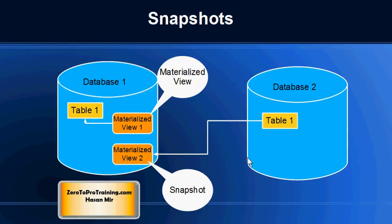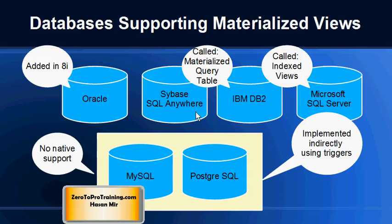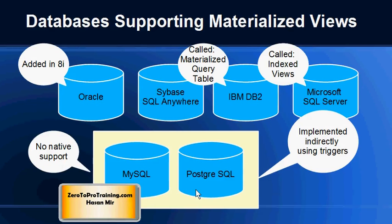The feature of materialized view is available in all top databases including Oracle, Sybase, IBM DB2, and Microsoft SQL Server. Oracle added this feature in release 8i. The terms are sometimes used differently — in DB2 it is called a materialized query table, and in Microsoft SQL Server it is called indexed views. MySQL and PostgreSQL do not offer the materialized view feature natively; however, we can create materialized views ourselves by using triggers and programming. We can create another table and write triggers to update that table automatically whenever the base table is updated, and that way we can end up creating our own materialized views.